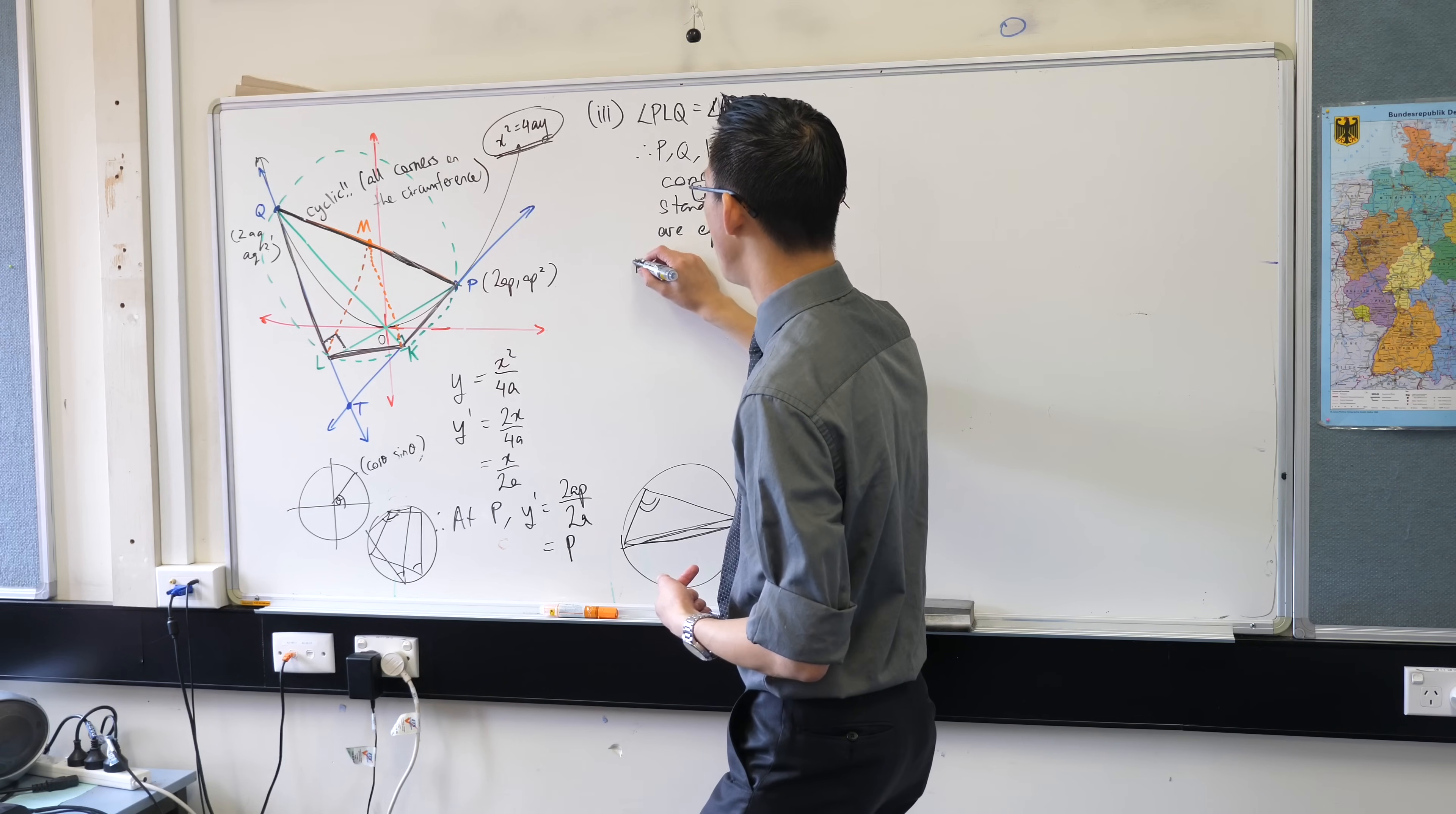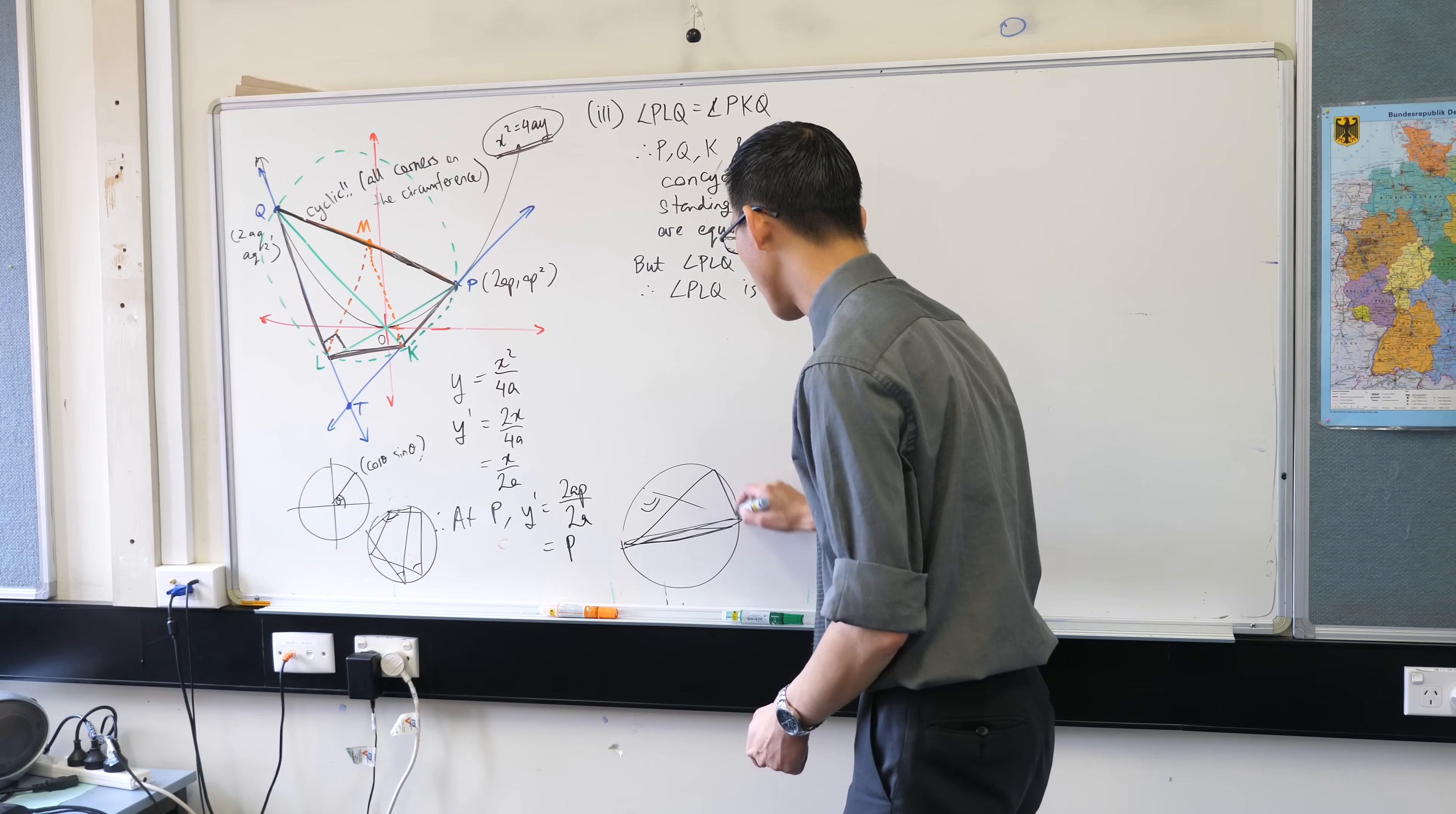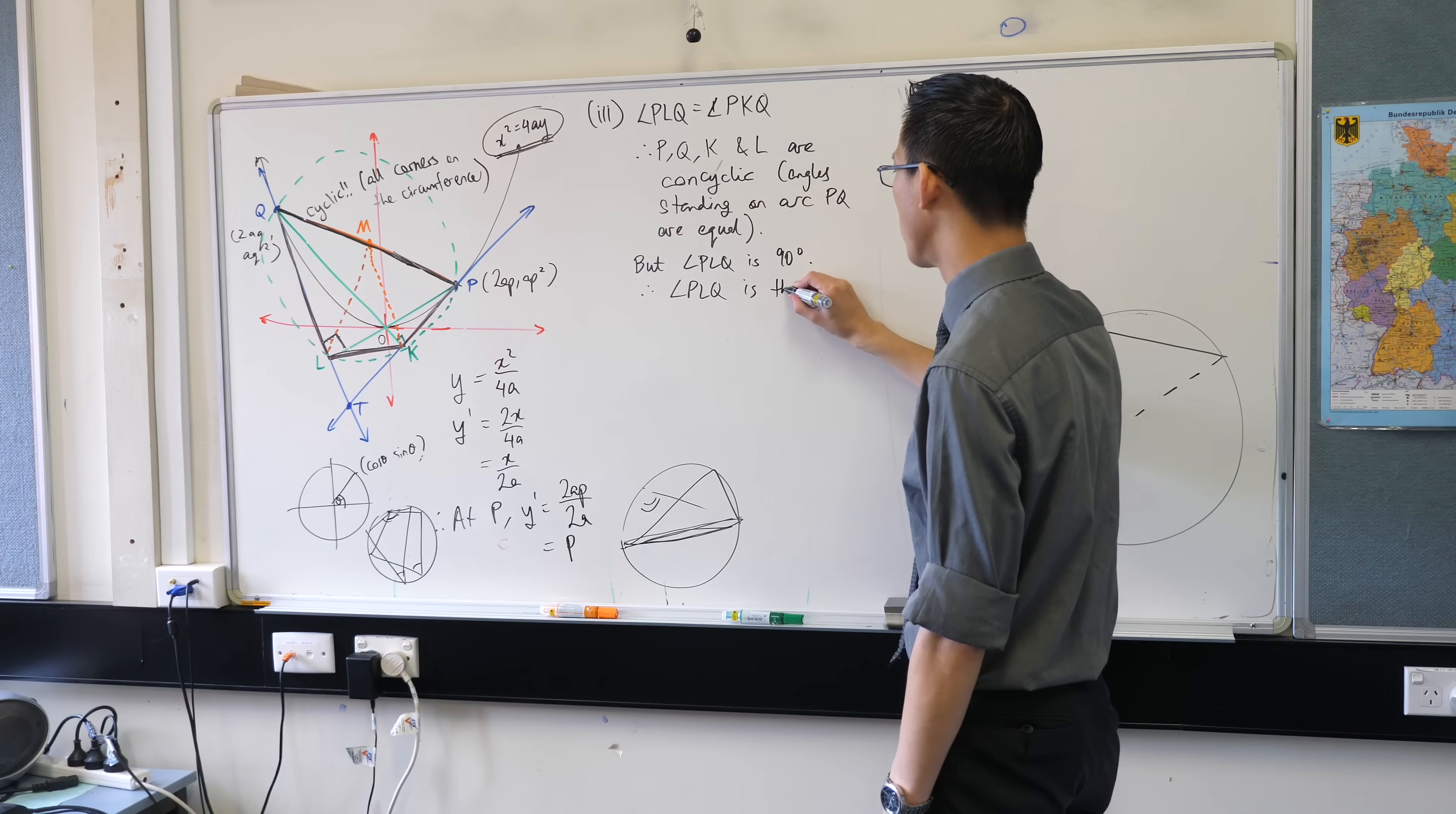So I can say but angle PLQ is 90 degrees, therefore angle PLQ is the angle in a semicircle because it's 90 degrees. And if you draw a 90 degree angle in a circle anywhere you find the diameter. We're used to doing it the other way around, we're used to saying here's a diameter now find an angle anyone you like. But if you had a random circle and just make a 90 degree angle anywhere, just put a random line over here and then go 90 degrees like that, you have found the diameter. So many properties in circles they go both ways.